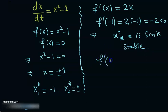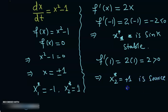f'(1) is going to be two times one which is two, which is positive. So this shows that x star sub two, which is plus one, is source, that is unstable.